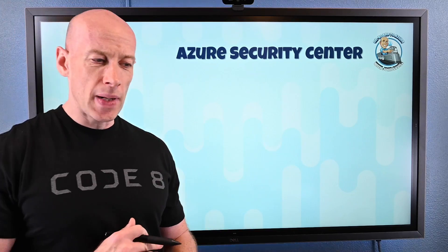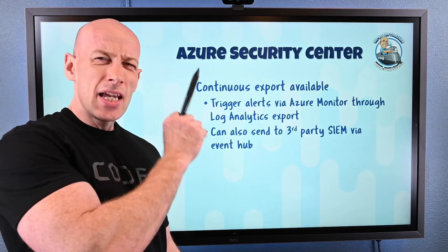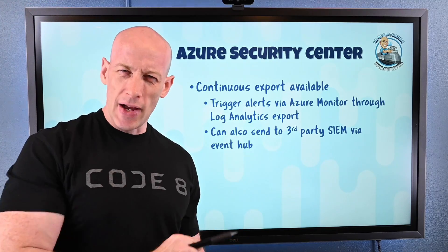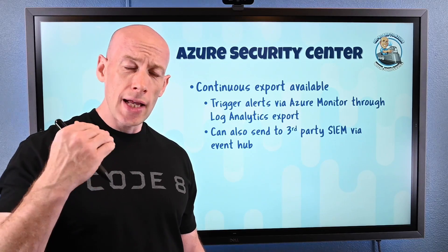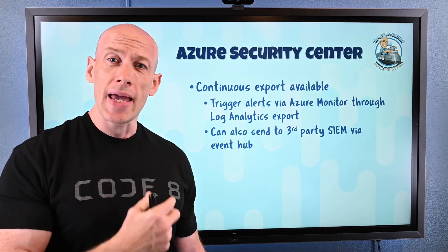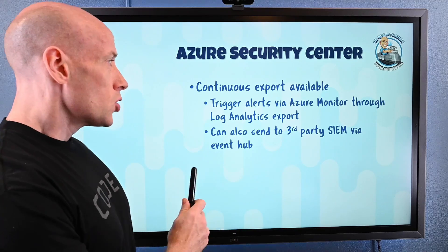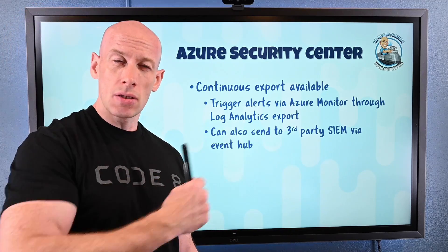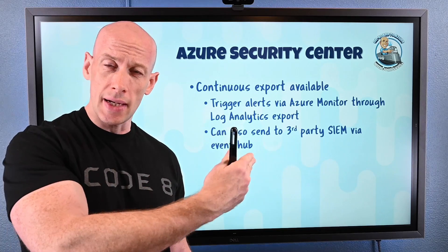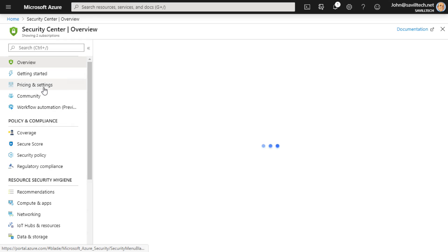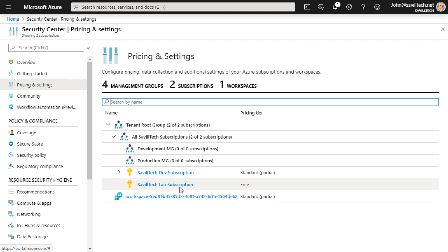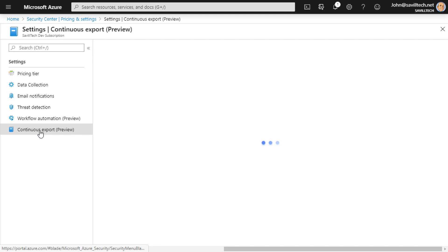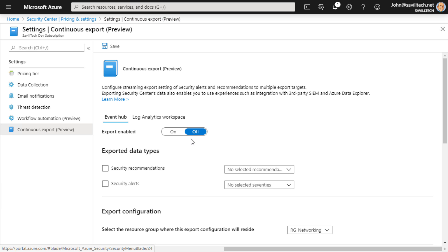Azure Security Center has been updated. There is now a continuous export capability available. I can export to a Log Analytics workspace — i.e., Azure Monitor. This means I could now trigger alerts through Azure Monitor based on that data sent to Log Analytics. I can also send it to Event Hub, which is how we would typically integrate a third-party SIEM system. So now my Azure Security Center alerts can go to Log Analytics and/or Event Hub.